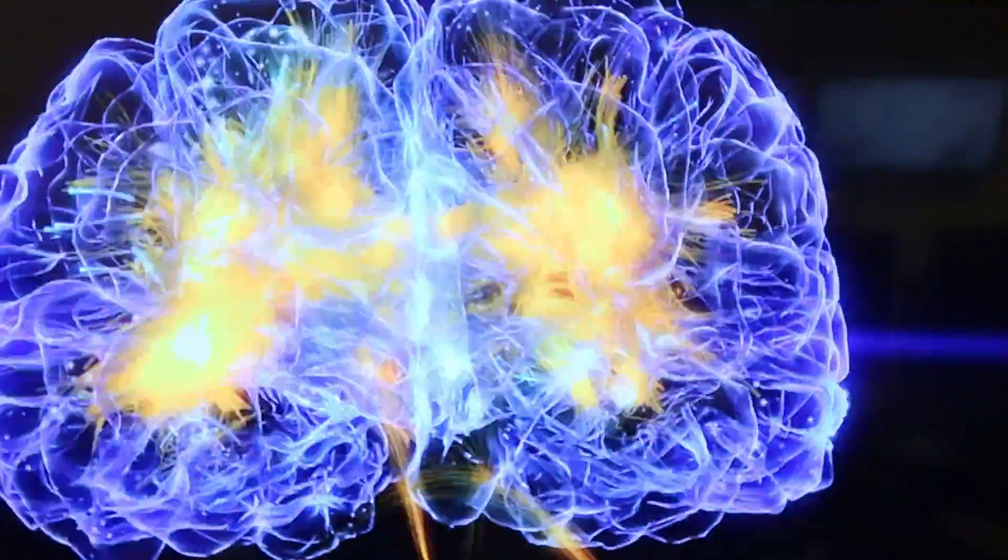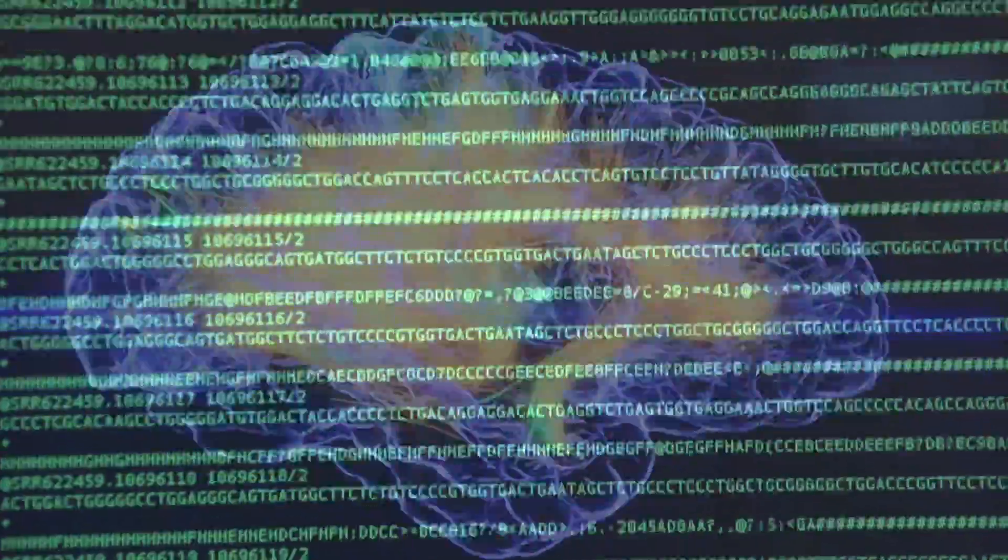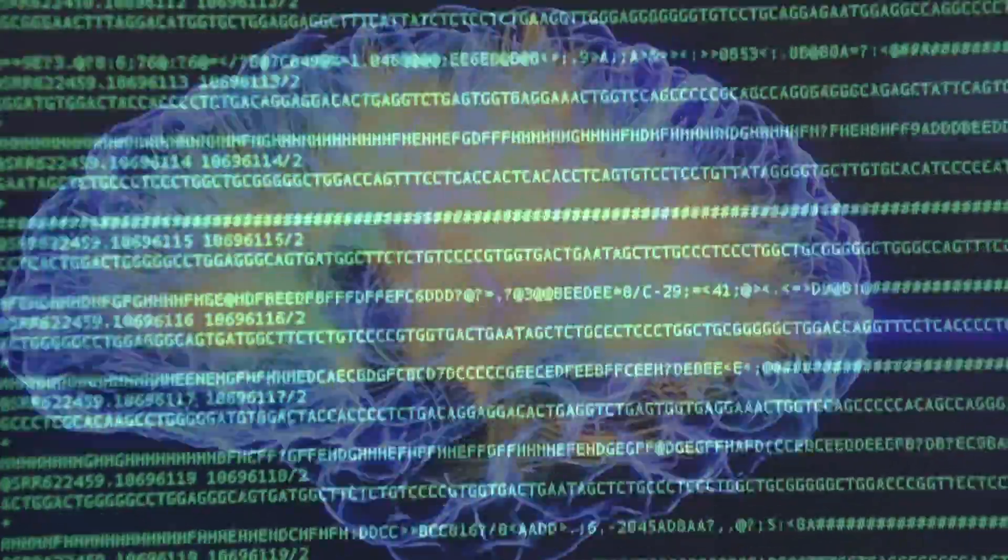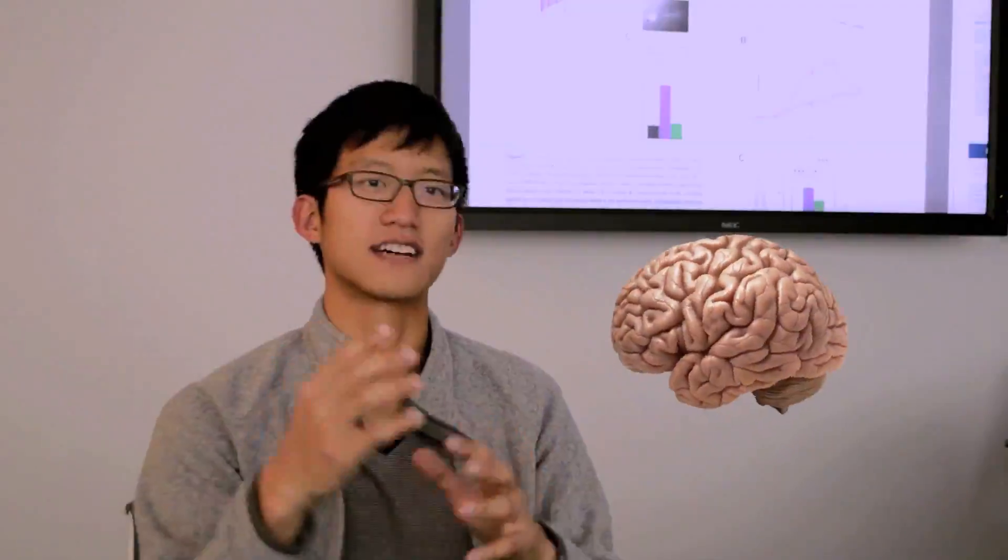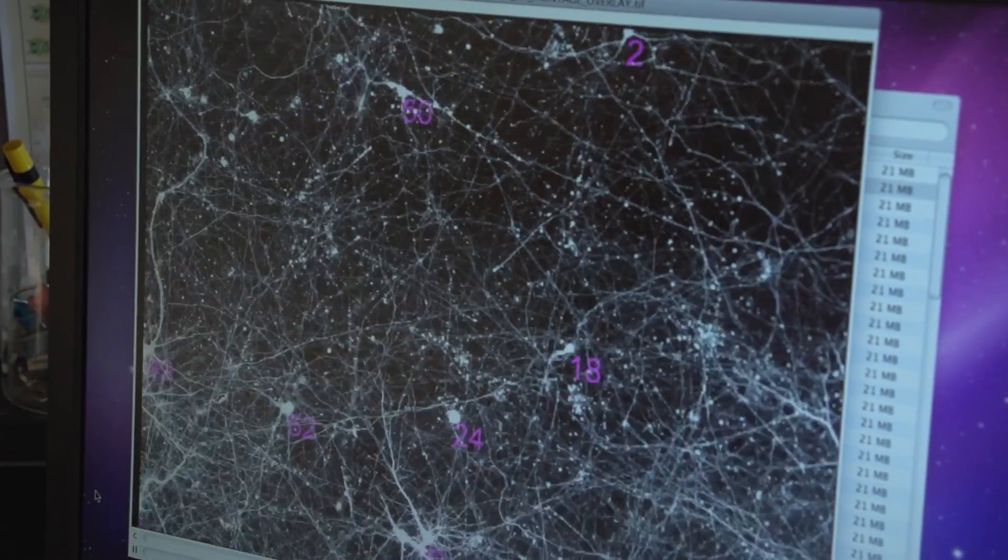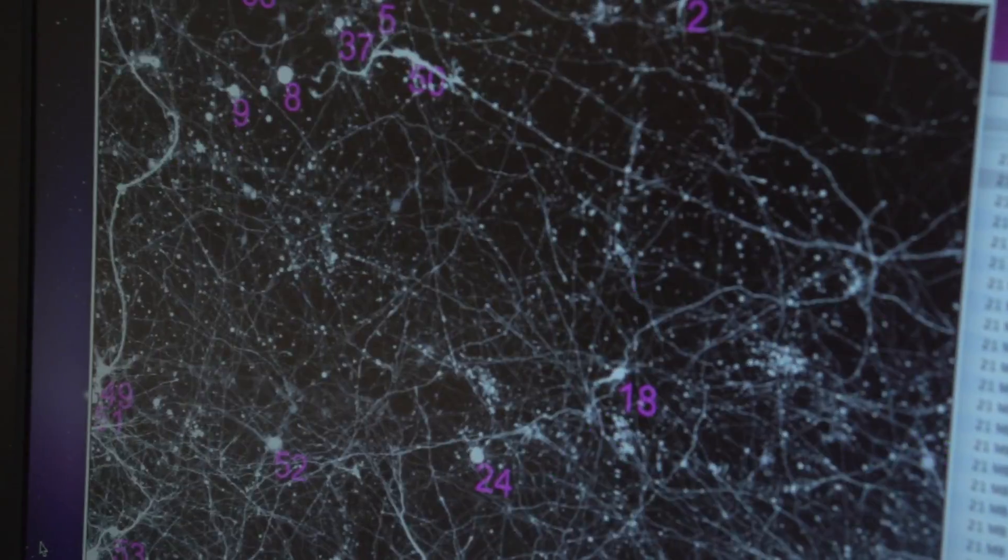But somehow this diagram can compute all these different inputs that get sent into this part of the brain, and somehow the diagram processes and transforms information and then spits out some sort of action. It's a very fascinating process how the brain computes information, the cells involved in that computation, and how cognition can arise from a physical substrate.